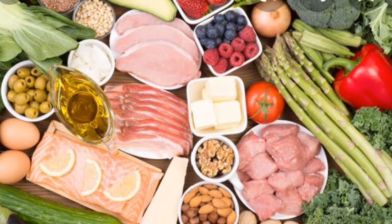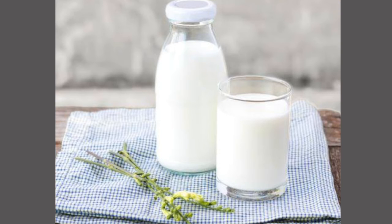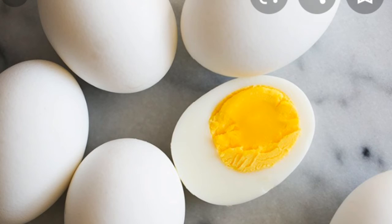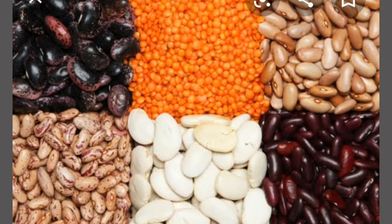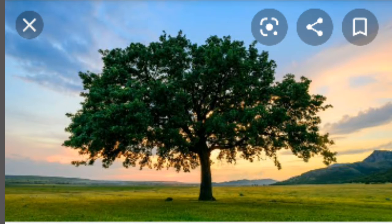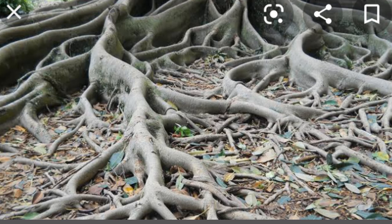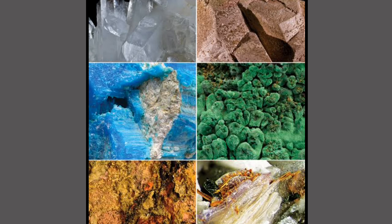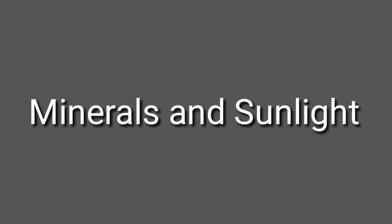Animals eat ready-made food in the form of milk, bread, wheat, eggs, meat, fruits, and vegetables. Green plants, however, prepare their own food. Through roots they obtain water and minerals from the soil. For preparing food, plants require carbon dioxide, water, minerals, and sunlight. The process of food preparation in plants is called photosynthesis.